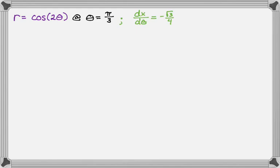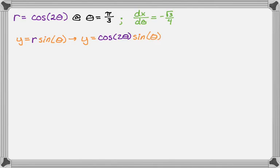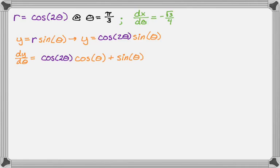To summarize: r is cosine of two theta, we're evaluating at pi over three, and dx/dθ equals negative radical three over four. Now we work on y. We know y equals r sine theta, so replacing r with cosine of two theta gives us a product again. To find dy/dθ we use the product rule: first times derivative of the second is cosine theta, plus second times derivative of the first, which requires a chain rule.